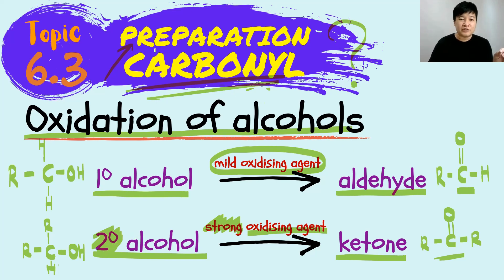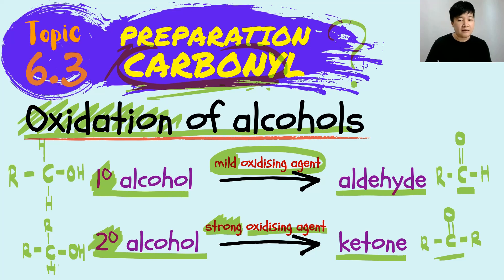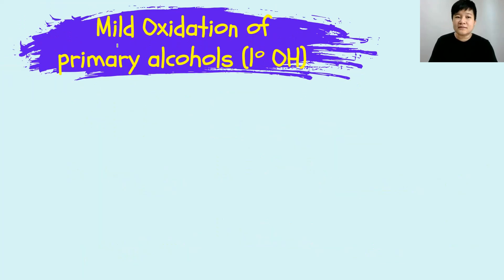Bear that in mind: to produce a carbonyl compound, one of the methods is oxidation of alcohol — specifically, oxidation of primary alcohol and secondary alcohol. Most importantly, your primary alcohol must use a mild oxidizing agent, while your secondary alcohol can use either a strong or a mild oxidizing agent. So let's start with the mild oxidation of primary alcohol.